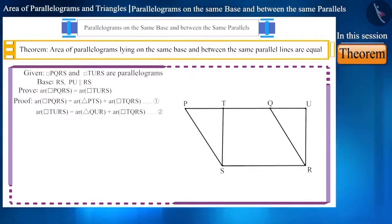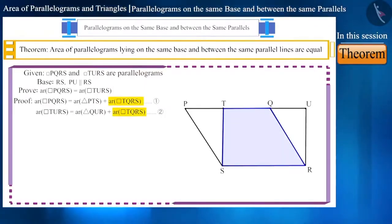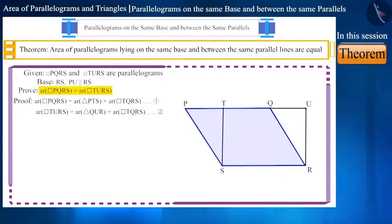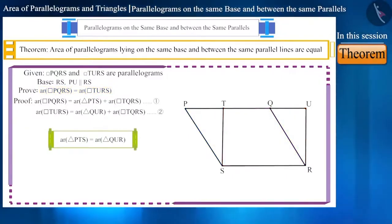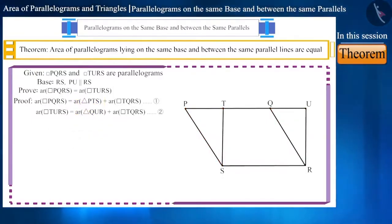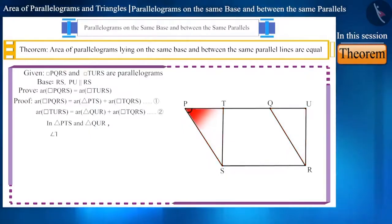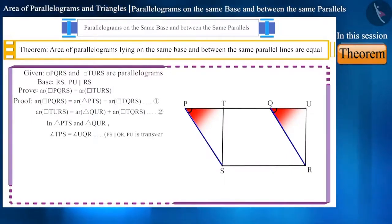Let us call that Equation 2. In Equations 1 and 2, quadrilateral TQRS is a common quadrilateral. To prove that the area of both these parallelograms is equal — that is, Area(PQRS) = Area(TURS) — we will have to prove that the areas of triangle PTS and triangle QUR are equal. Looking at triangle PTS and triangle QUR, angle TPS equals angle UQR because PS is parallel to QR and PU is a transversal, making these a pair of corresponding angles.